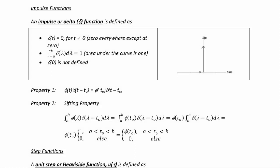Now let's discuss impulse functions. An impulse or delta function is defined as δ(t) = 0 for t ≠ 0, and the integral from -∞ to +∞ (or from 0⁻ to 0⁺) of δ(λ) dλ = 1, meaning the area under the curve is 1. Note that δ(0) is not defined.